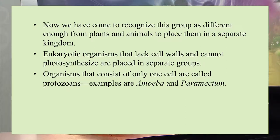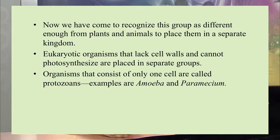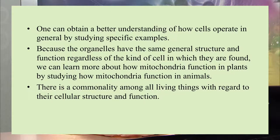Both plants and algae contain cellulose in their cell wall. There is another group that contains a cell wall but lacks chloroplast — that is the fungi. Among eukaryotic organisms, those that contain only a single cell are called protozoans, like amoeba and paramecium. The organelles have the same general structure and function regardless of the kind of cell in which they are found — for example, we can learn about how mitochondria function in plants by studying how they function in animals.